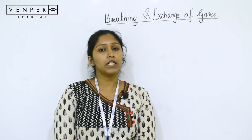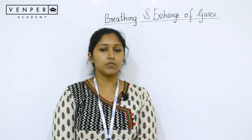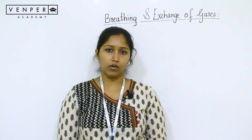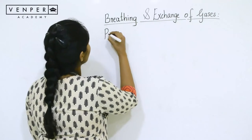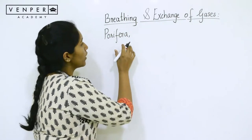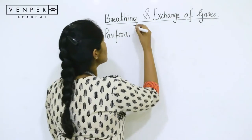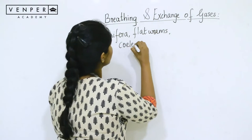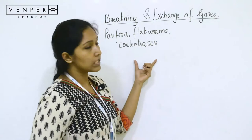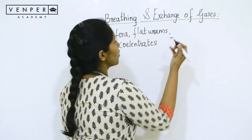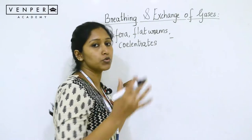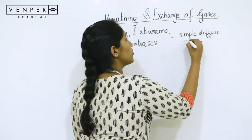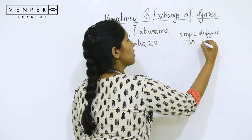Let's look at the different types of respiratory mechanisms seen in different organisms. Starting from lower organisms — in porifera (sponges), flatworms, and skates — what you see is simple diffusion all through the total surface area of the body.